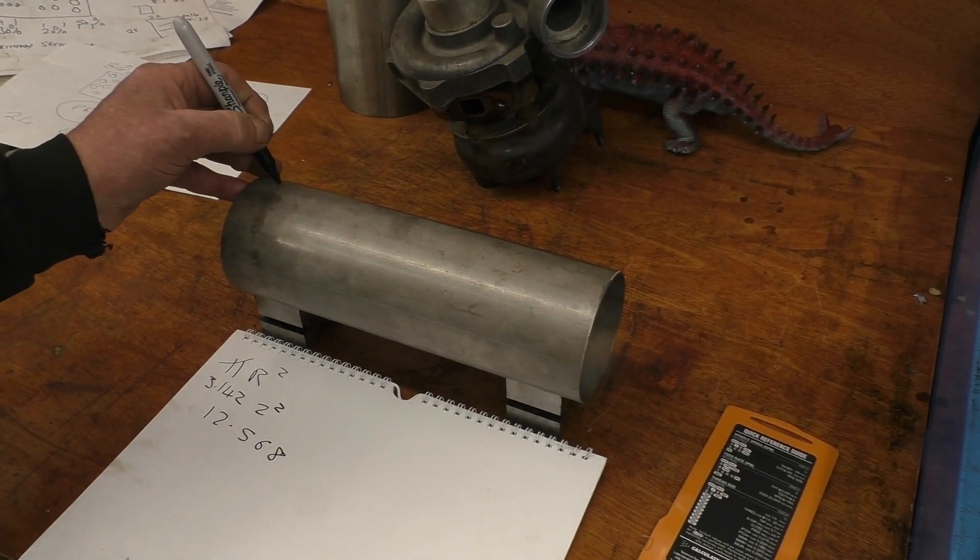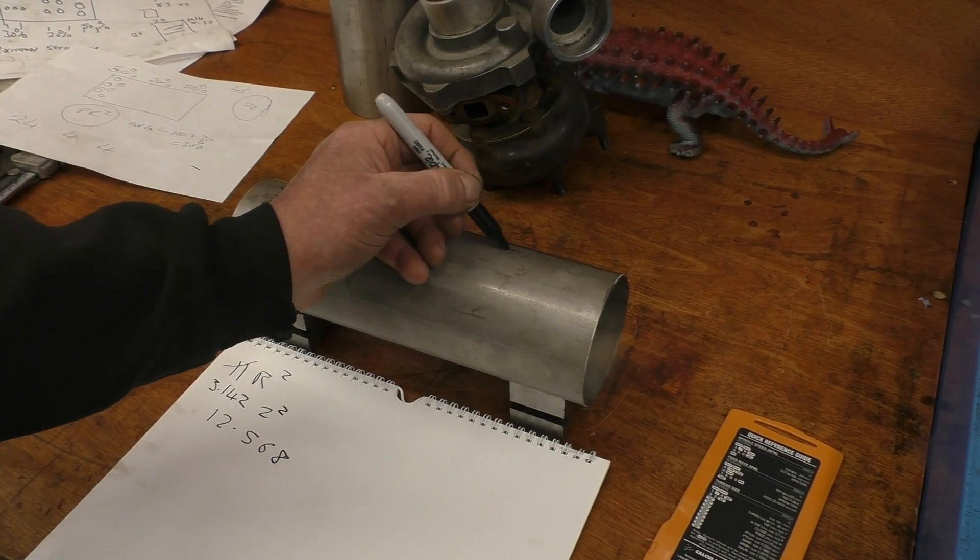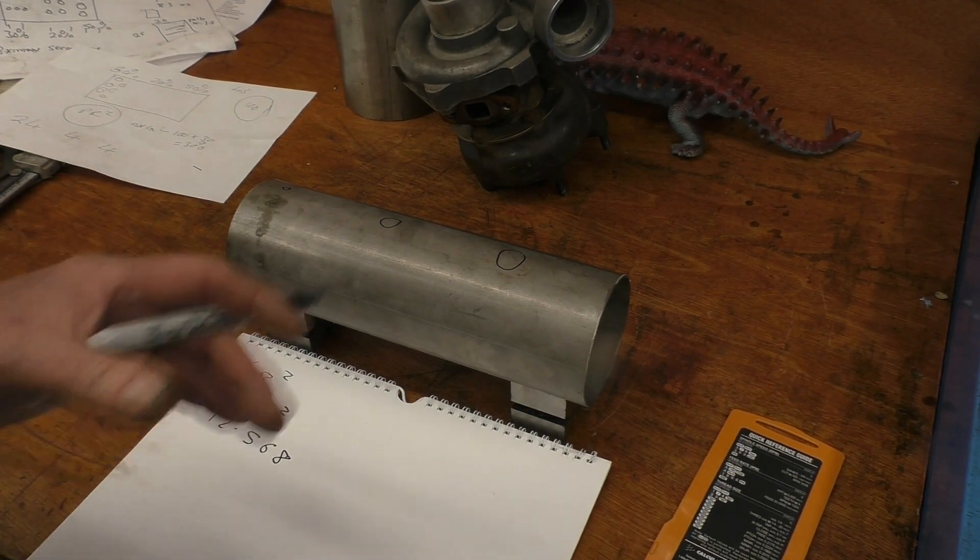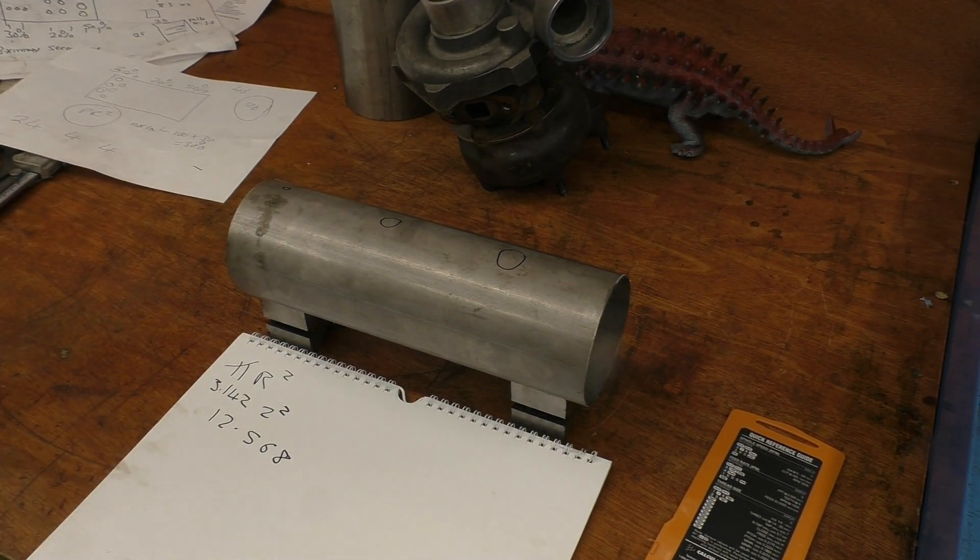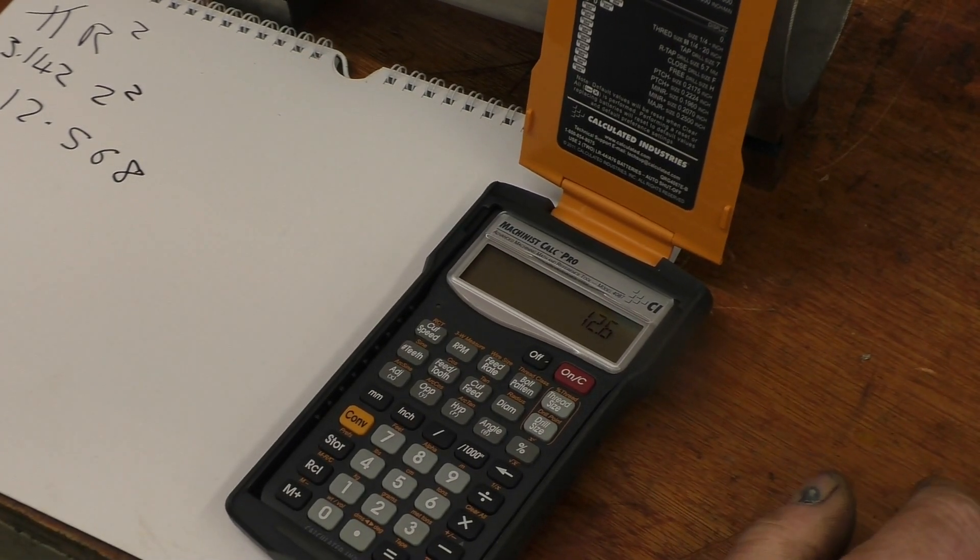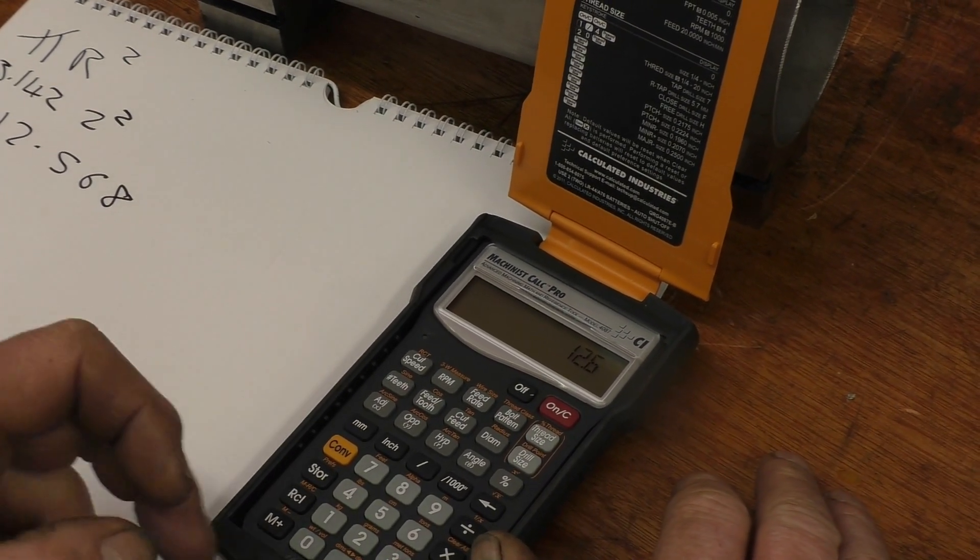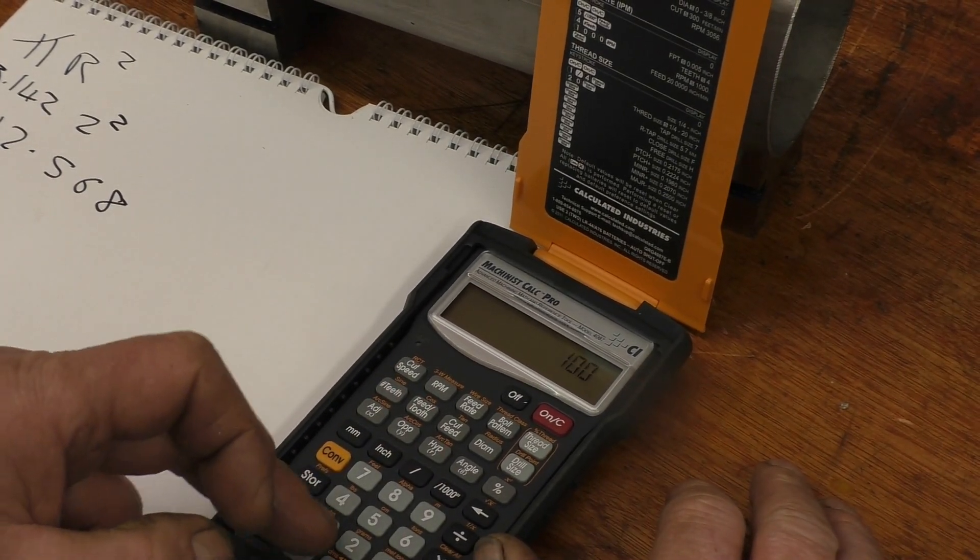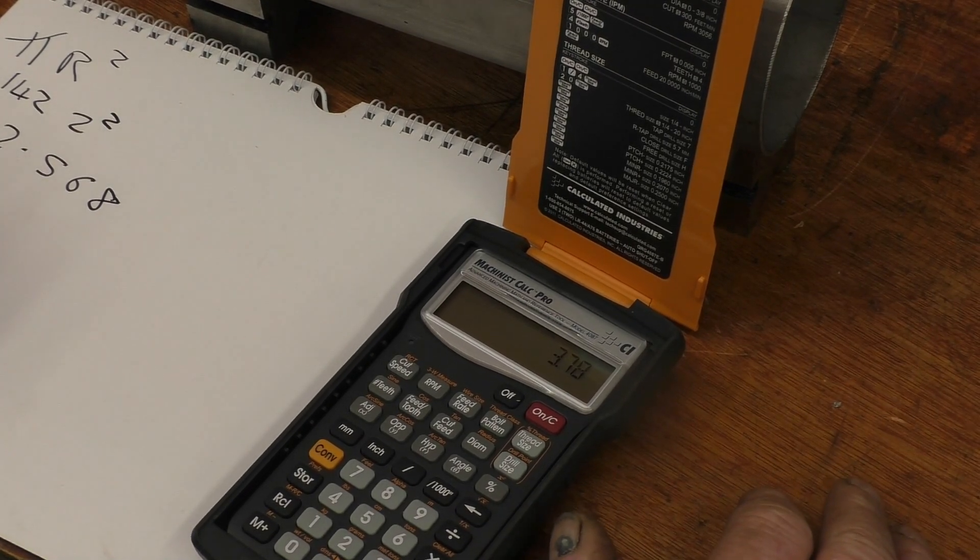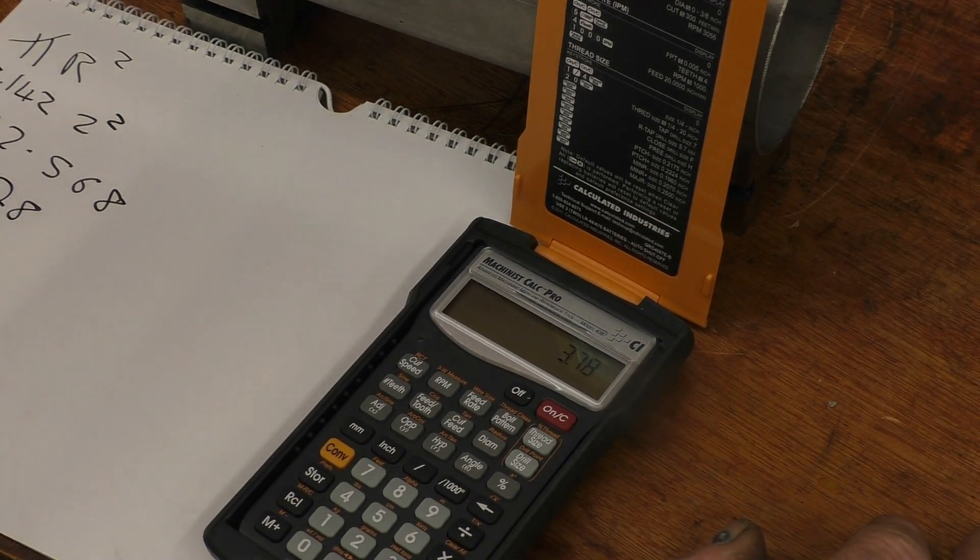So that's the area of the inducer of the turbocharger, 12.568. We said we wanted 30% primary, 20% secondary, and 50% tertiary, I think it's tertiary. Anyway, we'll call them dilution holes. So we want 30% of that. Right, I've rounded the area up to 12.6, so it's 12.6 divided by 100 times 30 equals 3.78. So 3.78 is 30% of the area of the inducer.